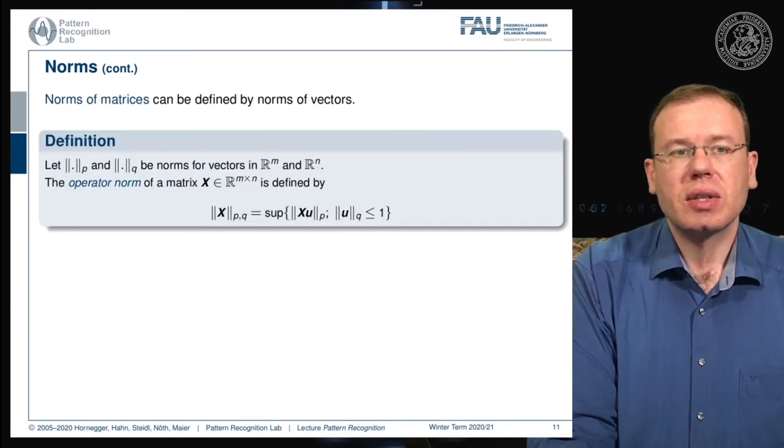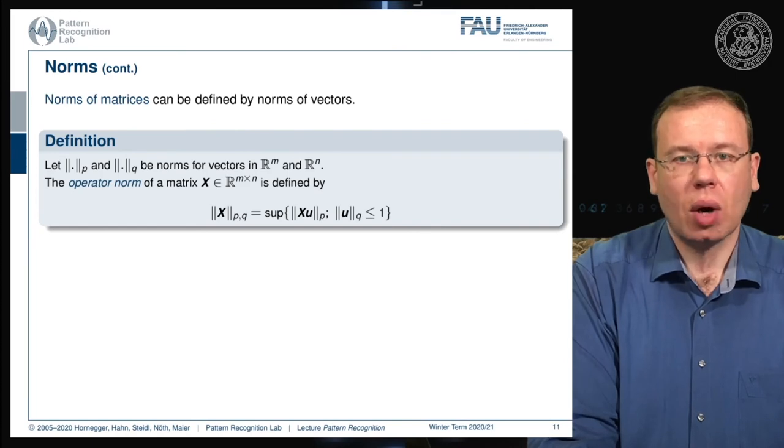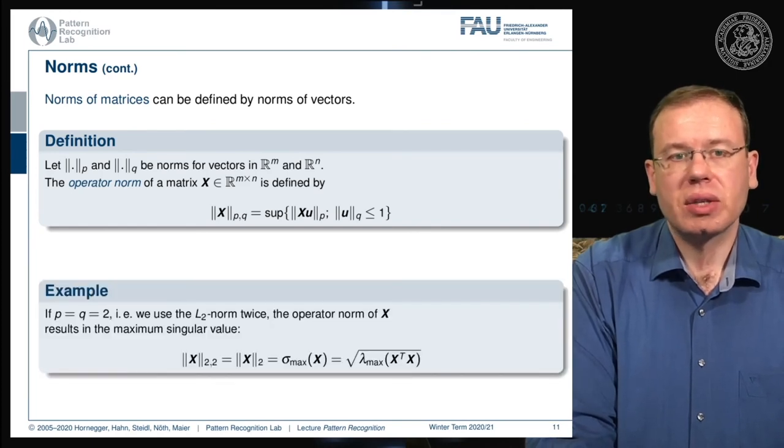You can also define norms for matrices using essentially norms of vectors. If you have two vector norms, say the p and q norms for vectors in ℝ^m and ℝ^n, then you can define the operator norm of a matrix X living in ℝ^(m×n). This is the supremum of the p-norm of X times u over the q-norm of u, with the q-norm of u limited by one.